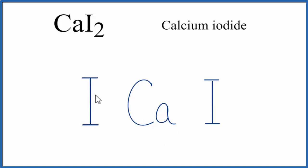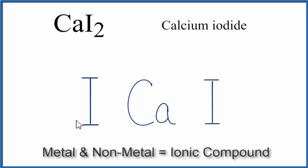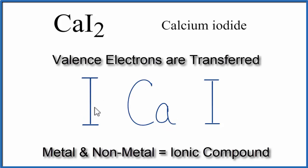Calcium is a metal, and iodine is a non-metal. That means we have an ionic compound here. And when we have an ionic compound, the metal will transfer valence electrons to the non-metals.